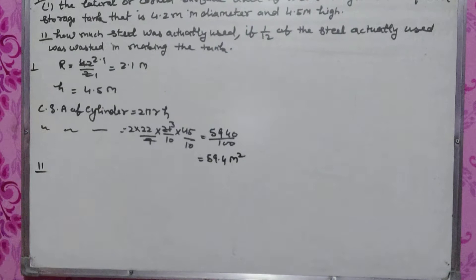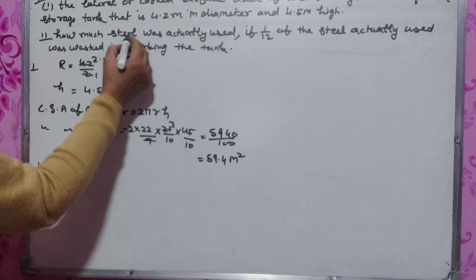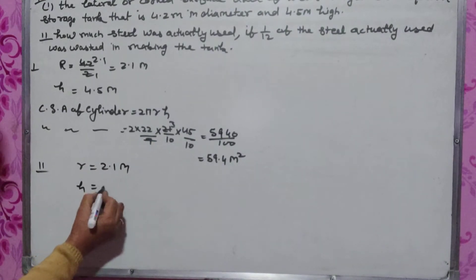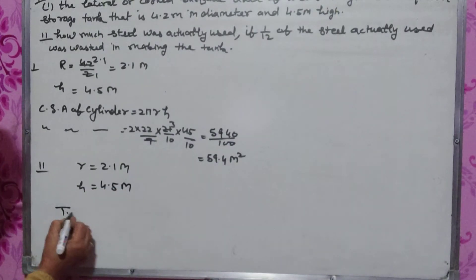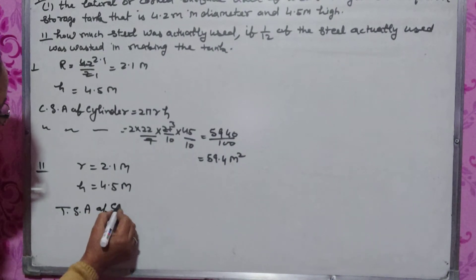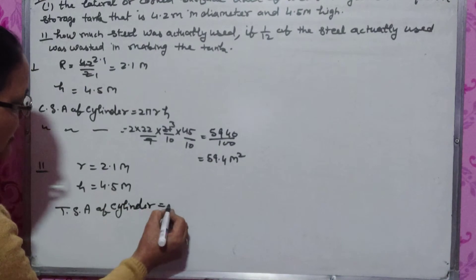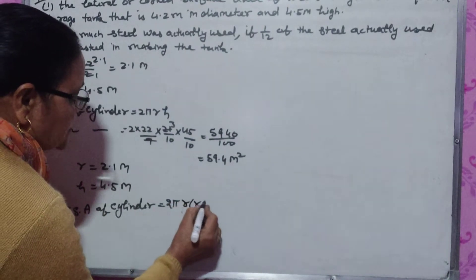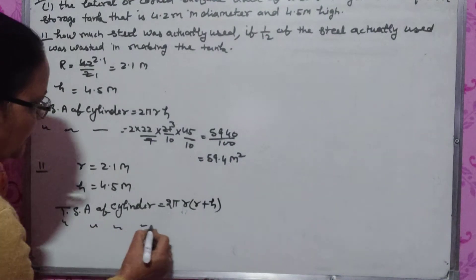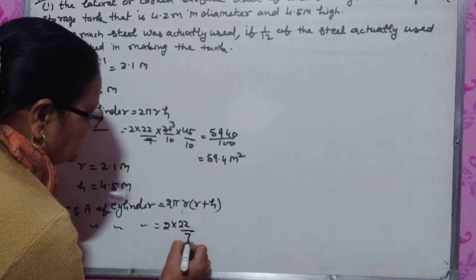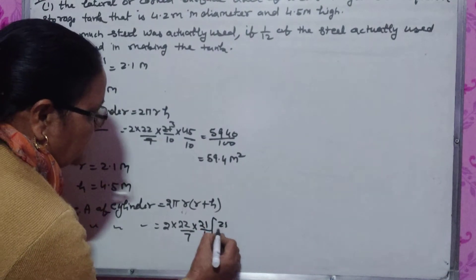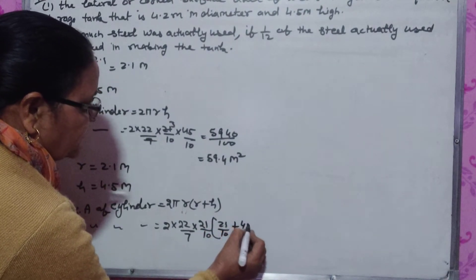The second part is how much steel was actually used. Total surface area of cylinder: radius 2.1 m, height is 4.5 m. Total surface area of cylinder is 2 pi r times r plus h. This equals 2 times 22 by 7 times 21 by 10 times 21 by 10 plus 45 by 10.